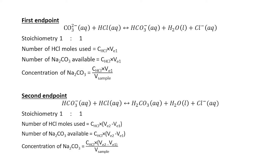What remains in the titration flask at the end of the first endpoint is bicarbonate ions. Bicarbonate ions hydrolyze in the aqueous medium and form carbonic acid and OH minus. When you add methyl orange indicator to this solution, it gives a yellow color. Bicarbonate then reacts with HCl, giving carbonic acid, water, and chloride ions. The endpoint of this reaction is determined by the color change of methyl orange from yellow to red.